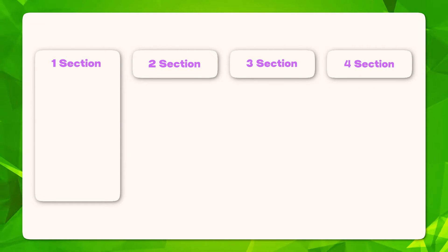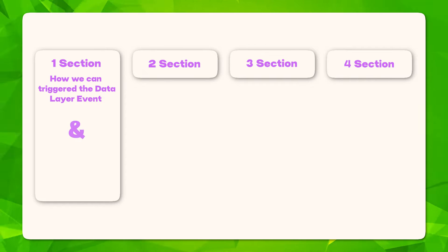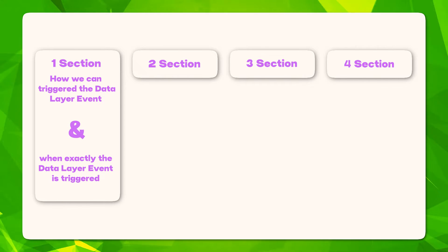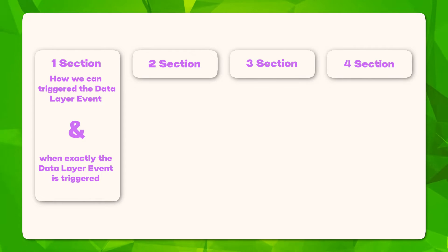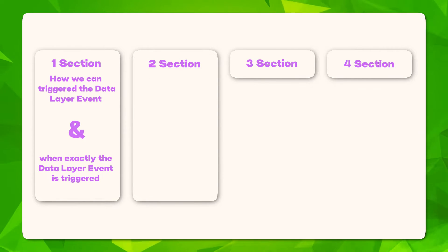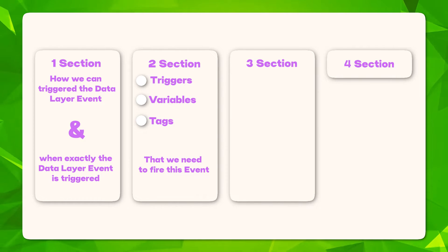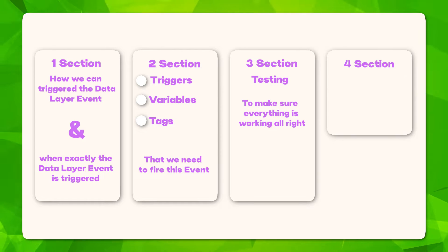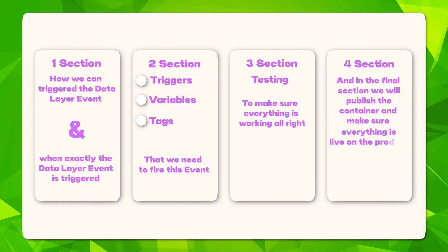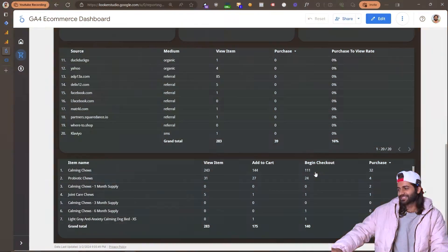Now we can see how to configure this event in Google Tag Manager so it is properly tracked in Google Analytics. To make everything simpler, I have divided this video into four sections. In the first section we'll see how to trigger the data layer event and when it fires, and verify if the data layer event is correct. In the second section we'll create the triggers, variables, and tags needed to fire this event. In the third section we'll do testing to make sure everything works, and in the final section we'll publish the container so everything is live on the production website.